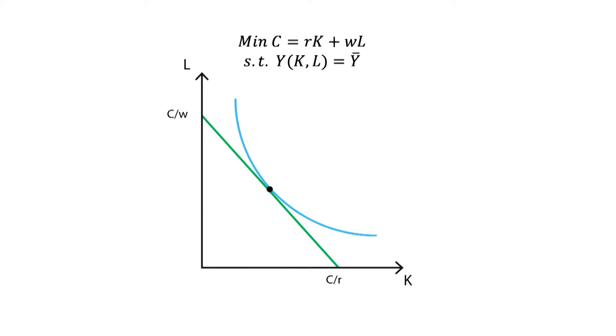The combination of inputs that minimizes cost while complying with the level of output desired will be composed of the equilibrium amount of capital and the equilibrium amount of labor.